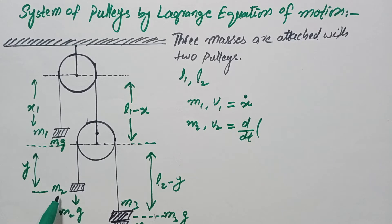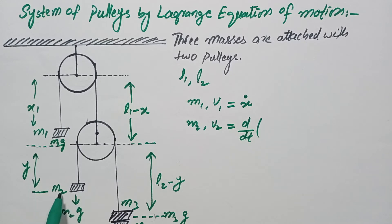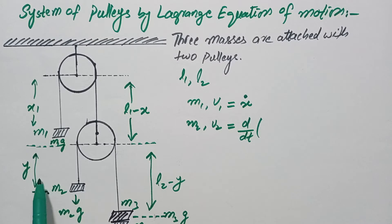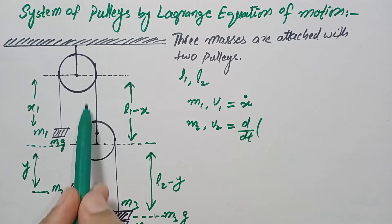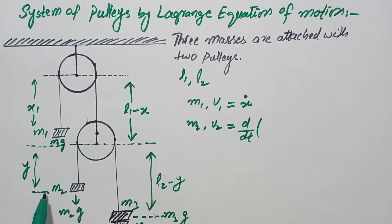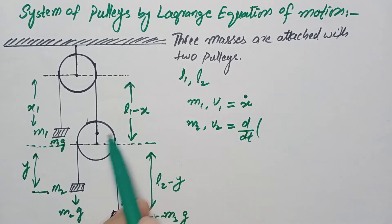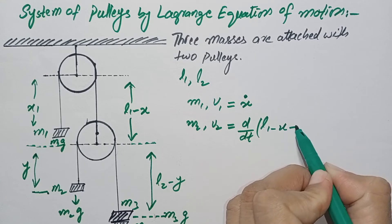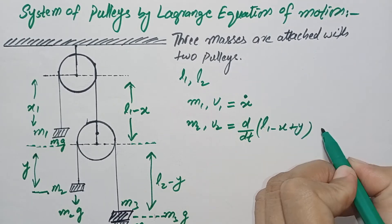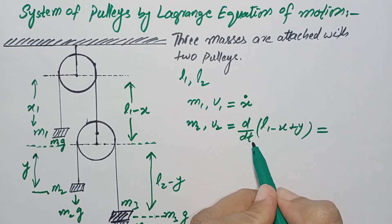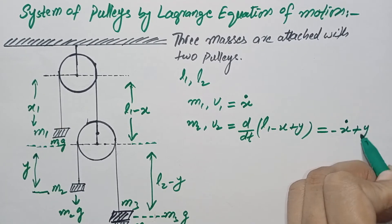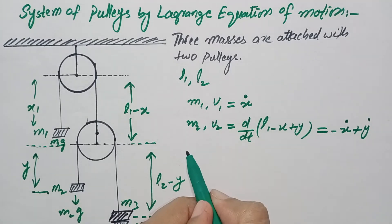The velocity of mass m2: since the distance between the centers of the two pulleys is l1 minus x and the position of mass m2 from the center of the second pulley is y, the position of m2 from the first pulley center is l1 minus x plus y. Taking the time derivative, l1 is constant, so it gives minus ẋ plus ẏ.